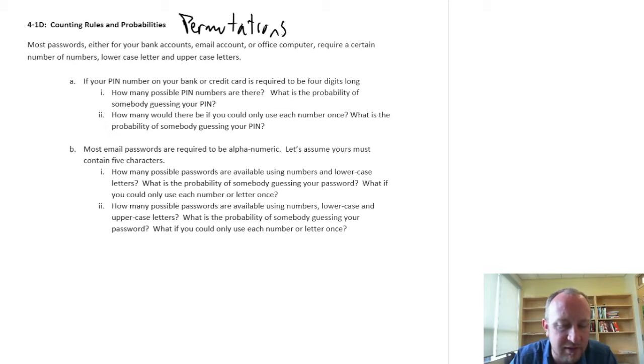So if we look at here our first example, we're going to look at pin numbers to access our bank account. So it has to be four digits long. So one, two, three, four digits. How many possible pin numbers are there? What is the probability of somebody just guessing my pin number?